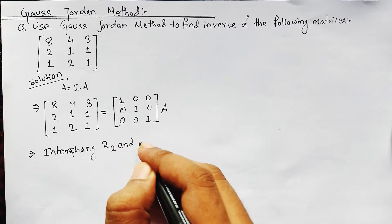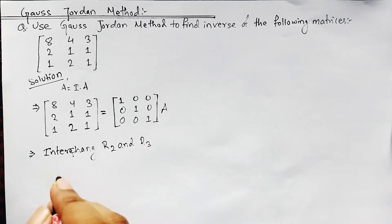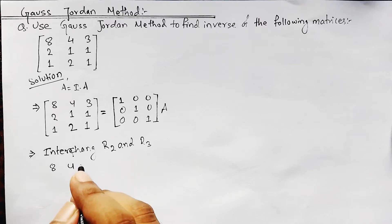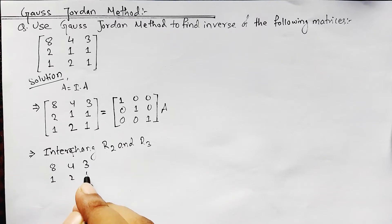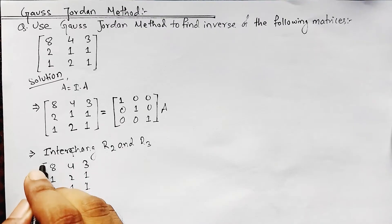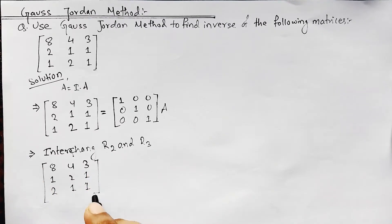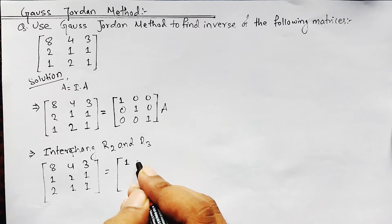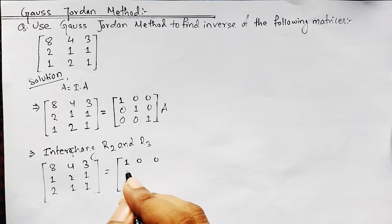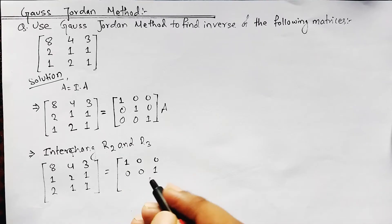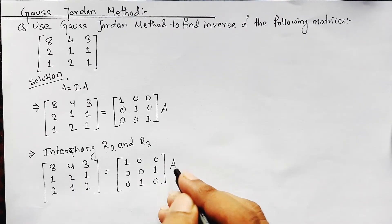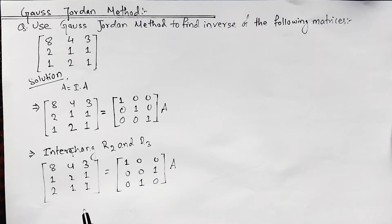We interchange R2 and R3, and we must perform the same operation on the identity matrix side as well. After interchanging R2 and R3, the identity side becomes [1,0,0; 0,0,1; 0,1,0], multiplied by A.